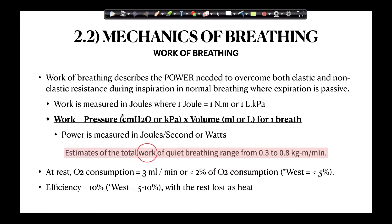This is where it gets confusing: work has units of joules, while power has units of joules per second or watts. Ganong has a line stating that estimates of the total work of quiet breathing range from 0.3 to 0.8 kilogram-meters per minute — but because there is a time component here, this is wrong. In actual fact, that should say the total power of quiet breathing. Be aware that this terminology is used incorrectly in some textbooks, which is why the units will differ.